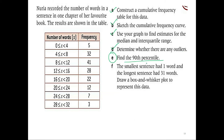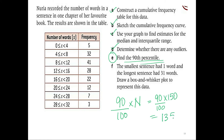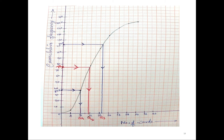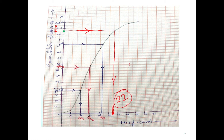The next part is to find the 90th percentile. The 90th percentile is 90 divided by 100 times N. Here N is 150, so 90 over 100 times 150 gives 135. Go back to your graph, mark 135 on the y-axis, draw a straight line using a ruler to hit the curve, and drop it down. The 90th percentile answer is 22 words.